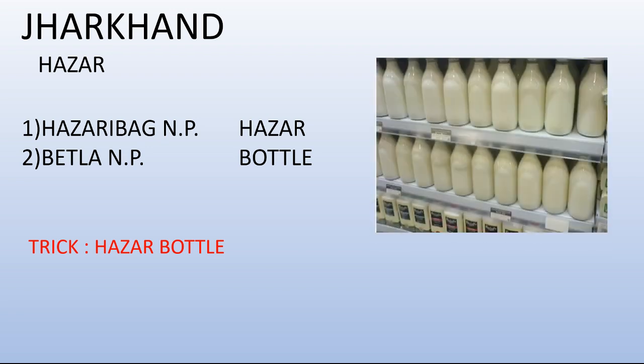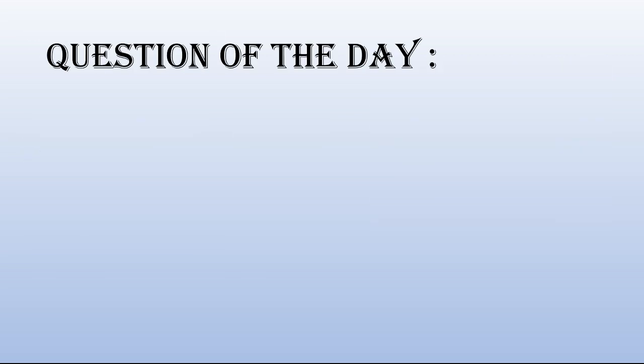So you will remember that this is the 1000 bottles of Jharkhand trick. This covers today's 5 states and their National Parks. Now let's go to the Question of the Day. I will give you this question so you can check whether you got my lecture or not. Please contribute to me — I am working hard for you, and if you give me some motivation in the comment section I will give you more good videos.